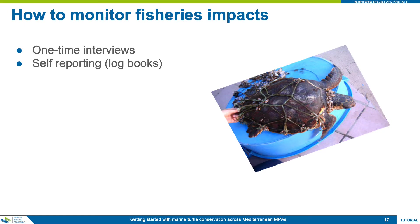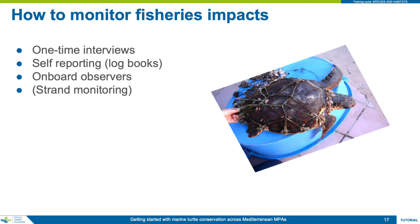Self-reporting can be adopted broadly across the fishing fleet with logbook collections incorporated into MPA staff routine. Using impartial on-board observers requires more resources and is usually adopted by a subset of vessels to get a representative sample of activity and bycatch levels. With observers it is possible to get more in-depth data per fishing trip but from fewer vessels compared to self-reporting. The last monitoring method is turtle strand monitoring — checking stranded turtles for evidence of fisheries interactions such as entanglement, ingestion of gear, or external signs of intentional trauma.